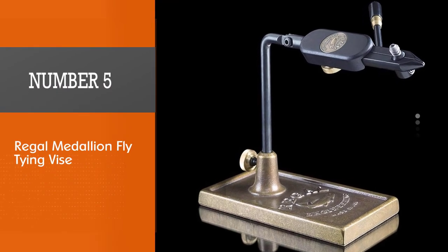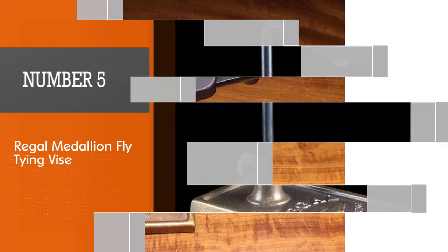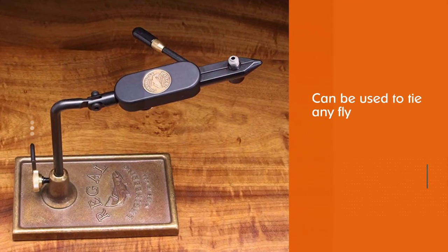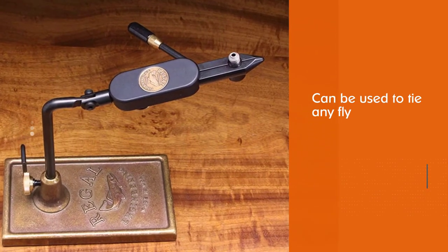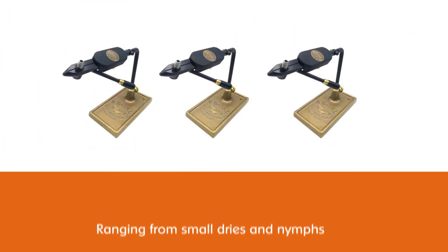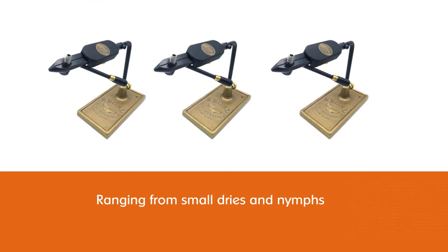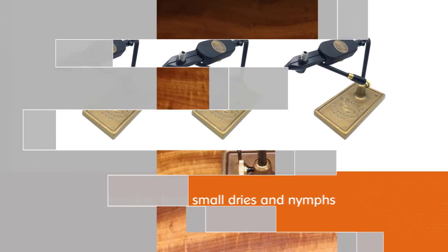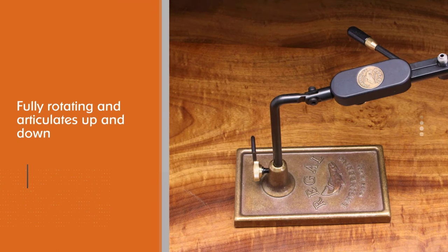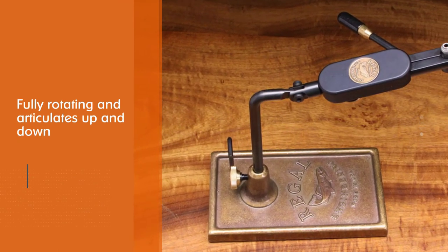Number five: Regal Medallion fly tying vice. The Regal Medallion is one of the best products on the market. Yes, you have to invest a bit of money, but if you are a serious fly tier, you won't regret spending your money on a Regal vice. Regal's flagship product can be used to tie any fly, ranging from small dries and nymphs all the way up to big streamers for large predators. The Regal Medallion is fully rotating and articulates up and down by 220 degrees.